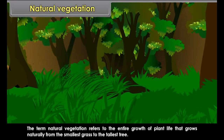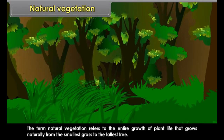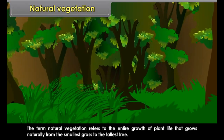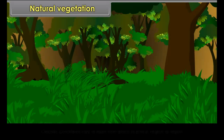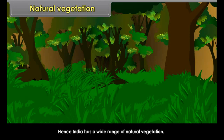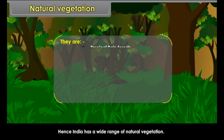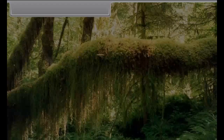The term natural vegetation refers to the entire growth of plant life that grows naturally, from the smallest grass to the tallest tree. Climatic conditions vary in India from place to place and region to region; hence India has a wide range of natural vegetation: tropical rainforests, tropical deciduous forests, thorn forests, mountain vegetation, and mangrove forests.